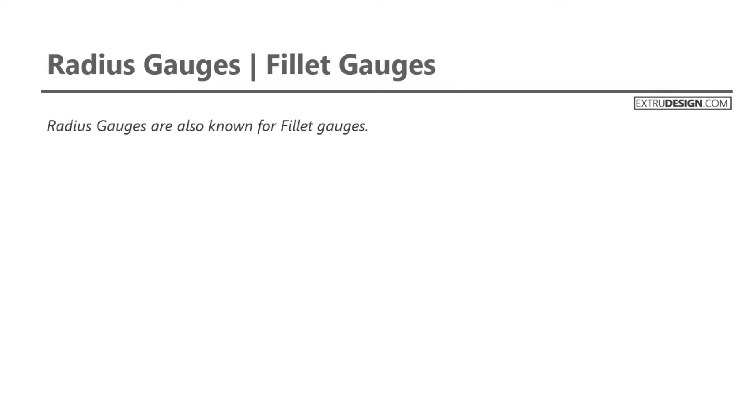Radius gauges are also known as fillet gauges. See the picture as shown on the right side.